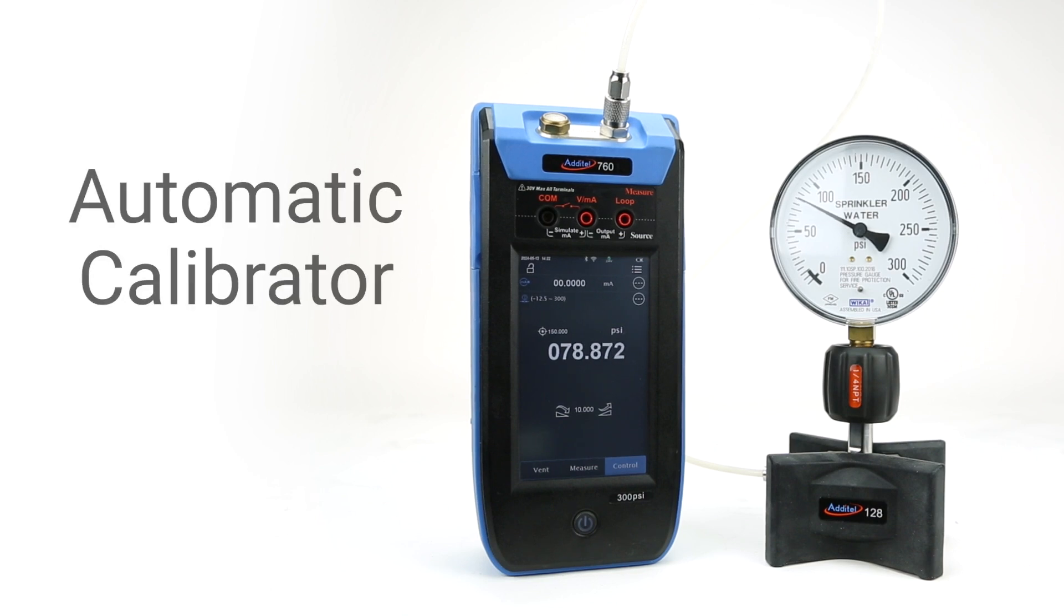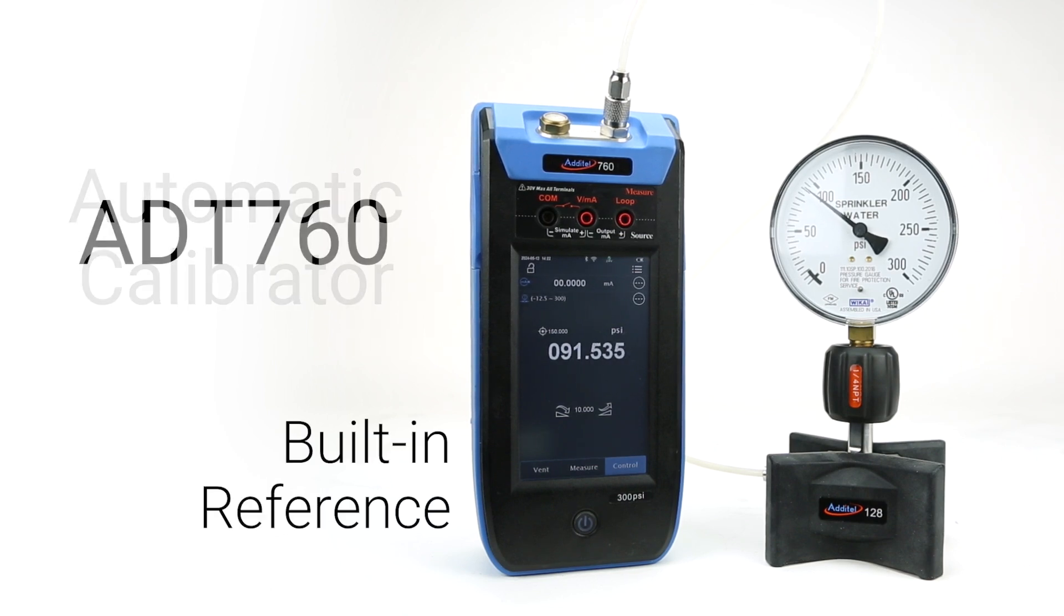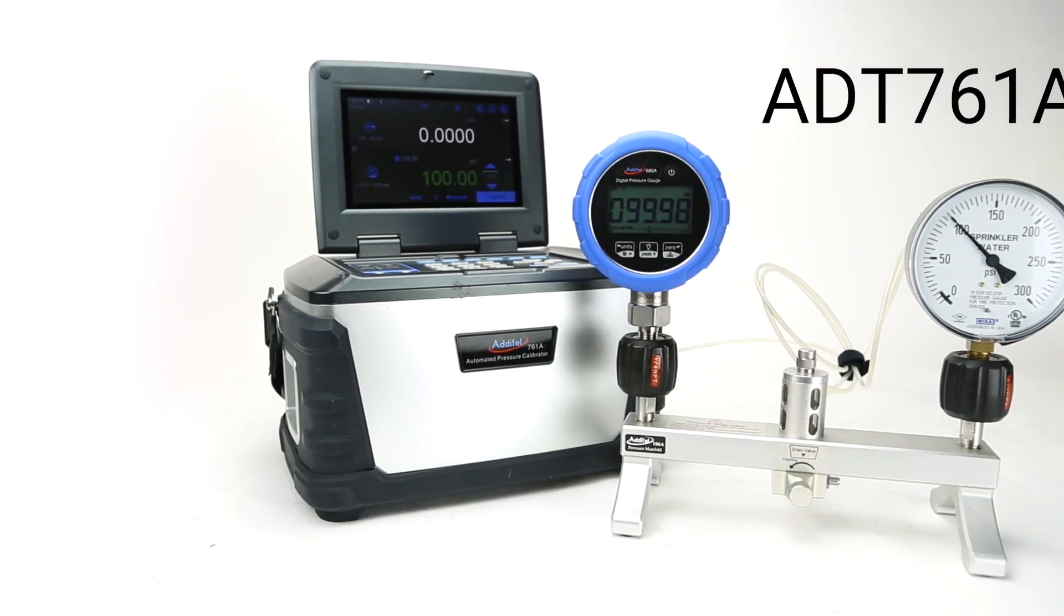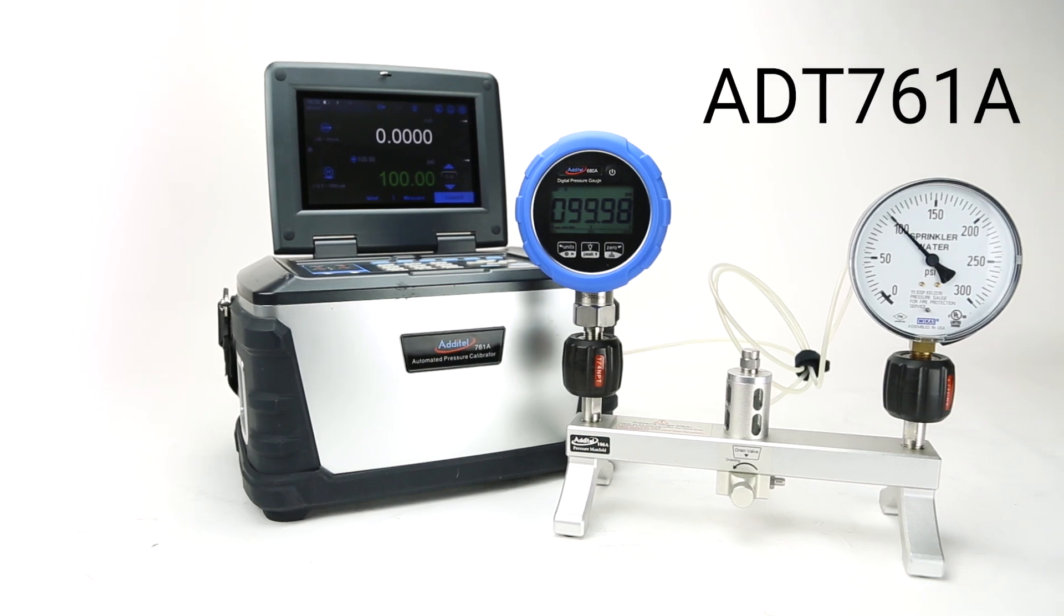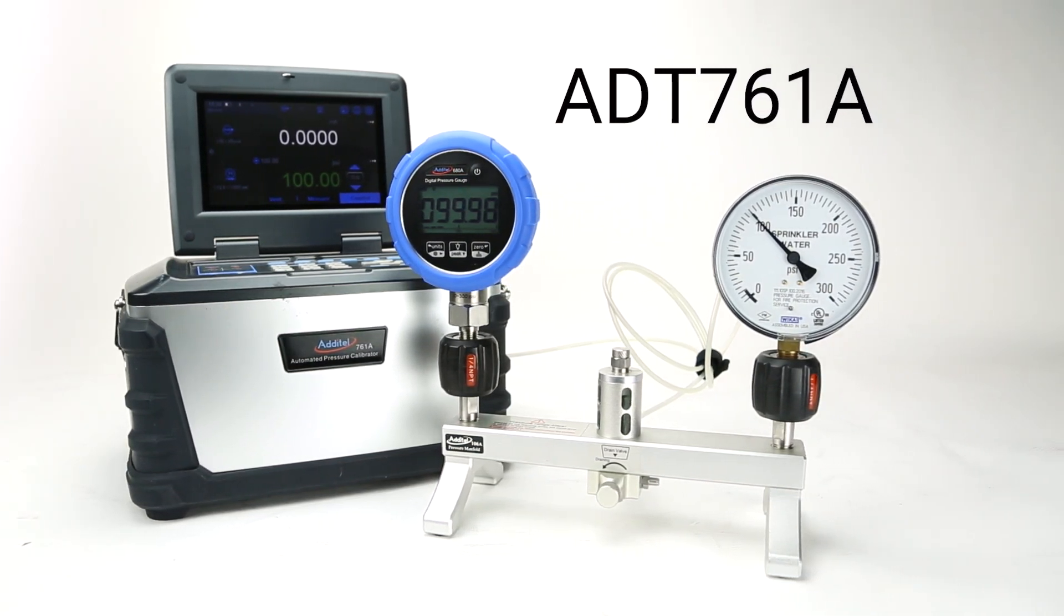Lastly, it could be an automatic calibrator that both includes a reference standard and generates its own pressure, like an Aditel 760 or 761A. Although these options are more expensive than a reference gauge and manual pump, it's important to weigh in the time cost of using manually operated tools versus using an automatic calibrator, especially when calibrating multiple devices.